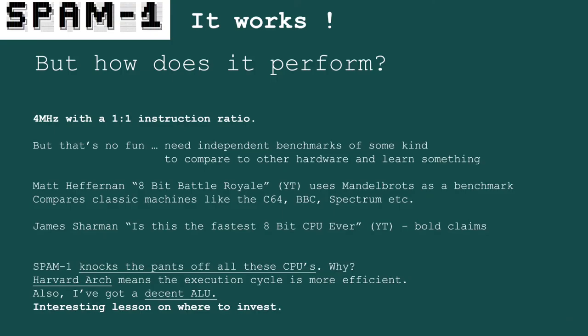How does it perform? Pretty well — 4 MHz, 4 million operations per second on a bed of wires and breadboards. But knowing the clock speed doesn't tell you much; you really need to compare it with other people's work. A fellow called Matt Heffernan has done a bunch of benchmarks on classic machines, looking at performance by plotting Mandelbrot plots, first in BASIC then in assembler on CPUs like the Z80 and 6502. James Charman also has his own retro CPU out there making bold claims about being the fastest 8-bit CPU ever.